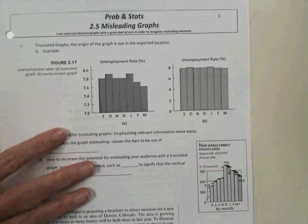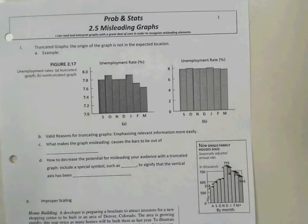So today's lesson is 2.5, misleading graphs. As we've been talking about, when you look at graphs and data, you always want to have that critical lens. Because a lot of times the people that are sharing the information with you through graphs and charts, they have a bias or an angle.